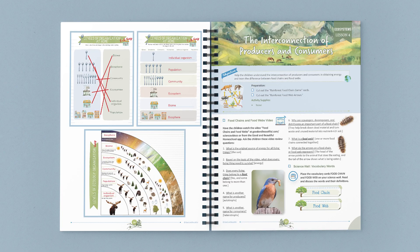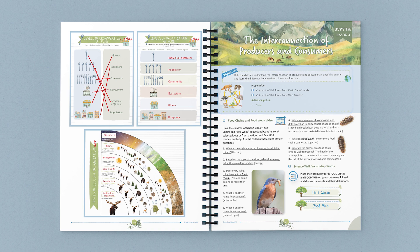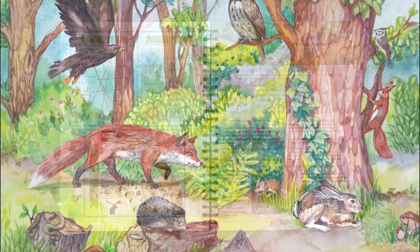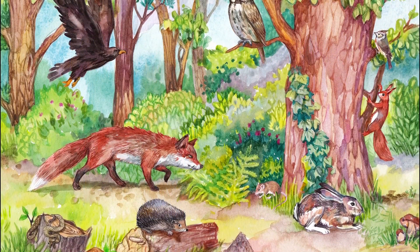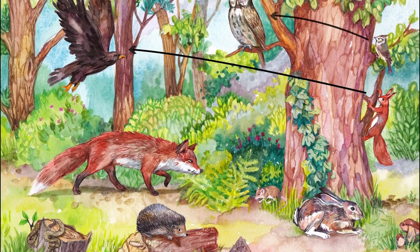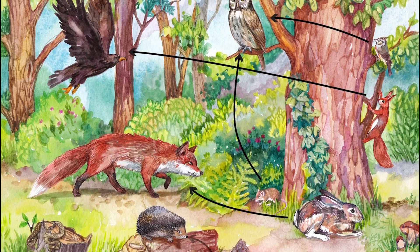Let's take a look at one of the lessons in this unit. This is lesson four: the interconnection of producers and consumers. As you can see, near the beginning of the lesson is a preparation and supplies list, giving you a quick look at what is needed for the lesson. This lesson begins with a wonderful video about the food chain and food web.